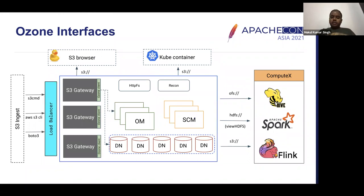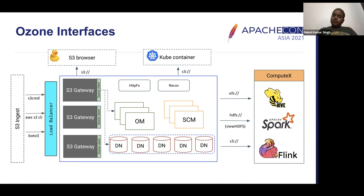Looking at the access point diagram in more detail: on the left, all S3 commands come through and go to the S3 gateway. You can also access Ozone via the S3 browser as well as using a Kubernetes container over S3. On the right, you have the traditional big data workflow — applications like Hive, Spark, and Flink can talk to Ozone via the Hadoop compatible file system, with Ozone sitting right in the middle.